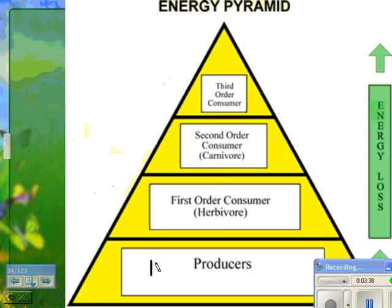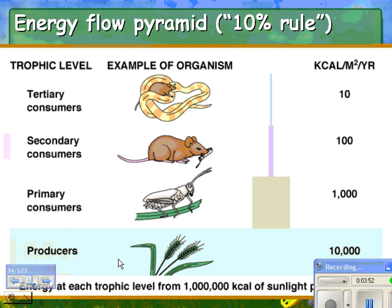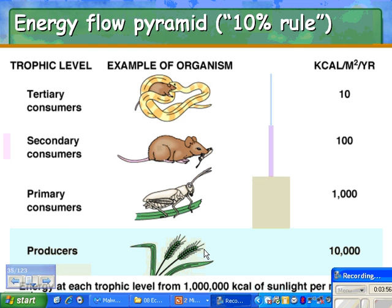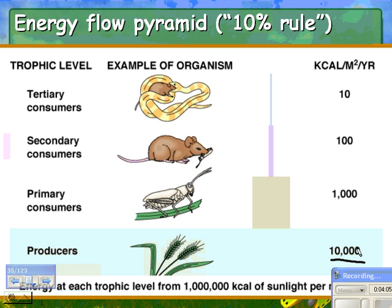Looking at trophic levels: first, second, third, and fourth. The second trophic level is the first-order consumer. The 10% rule states that energy at each trophic level decreases by about 90% — you only get 10% at each continuing level up. Producers might have 10,000 kilocalories per square meter; herbivores get about 1,000; the next level about 100; and then only about 10 kilocalories for the next. So you have far fewer snakes than mice, fewer mice than grasshoppers, and fewer grasshoppers than plants.